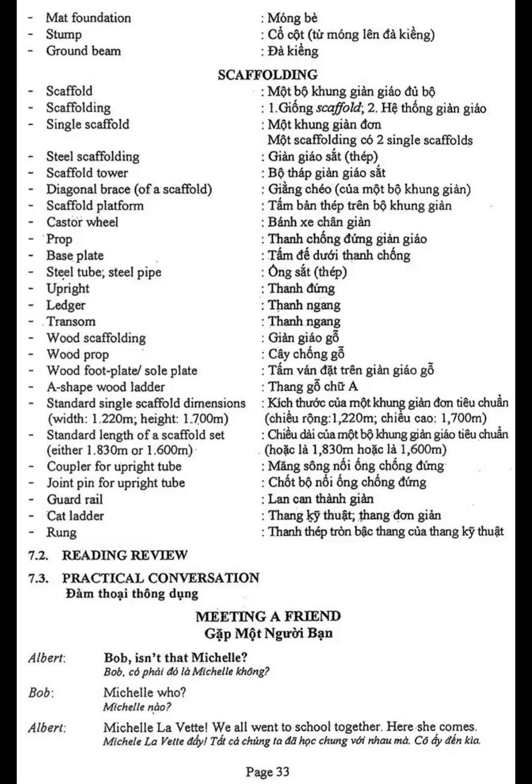1.700 meters. Standard length of a scaffold set: either 1.830 meters or 1.600 meters. Coupler for upright tube, joint pin for upright tube, guardrail, cat ladder, rung.